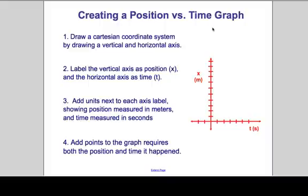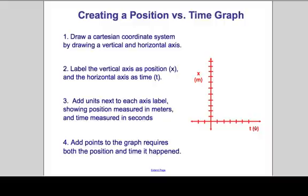When we're creating position versus time graphs, we use a Cartesian coordinate system. X, the location or position, is on the y-axis, time is on the x-axis. We label the units in parentheses, so x is meters, time is seconds, and we add points. This lets us know what's happening to the position as time progresses.